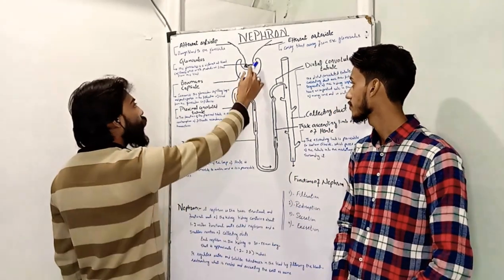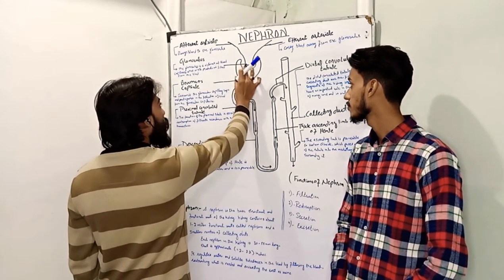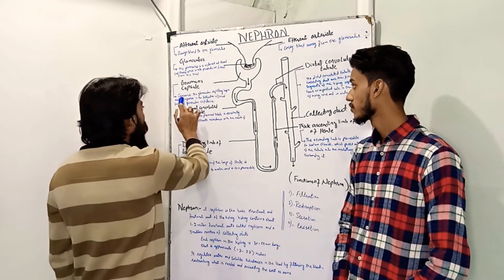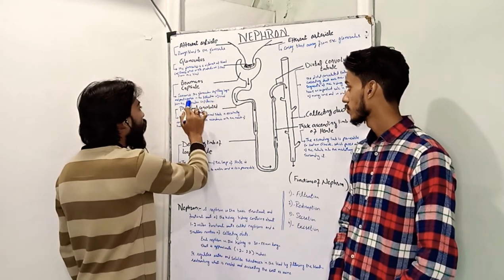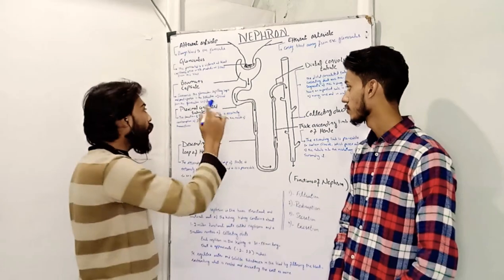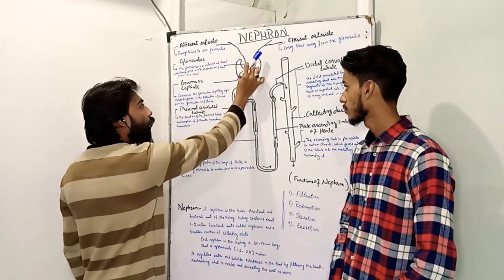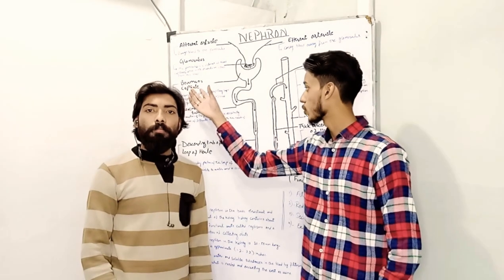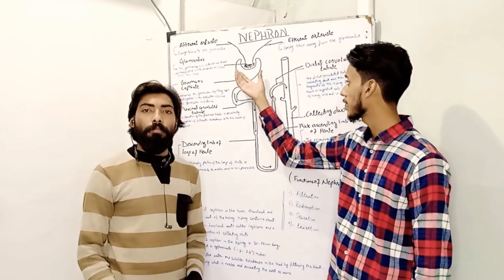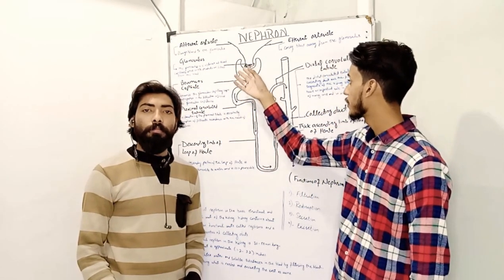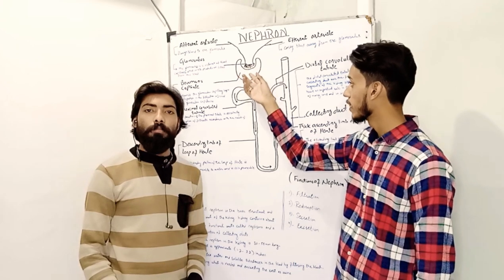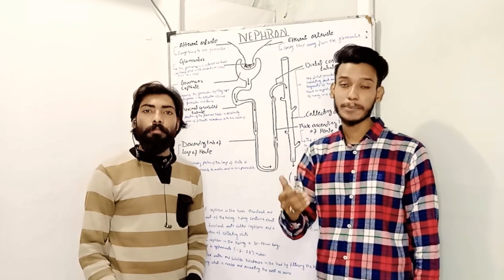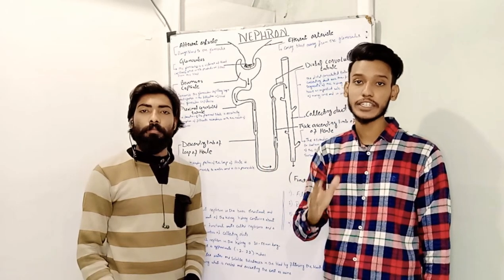This segment of the nephron is called Bowman's capsule. As you can see in the diagram, it has a cup-like shape and surrounds the glomerulus capillary loops. It participates in the filtration of blood from the glomerulus capillaries.